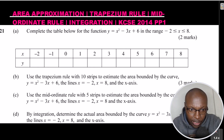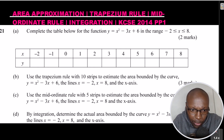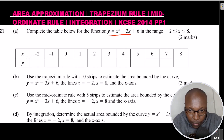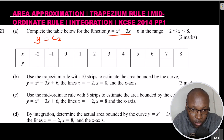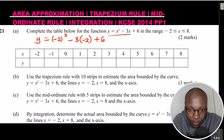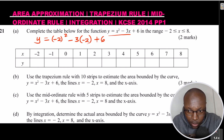The first part is straightforward — you just need to complete the table using that function. To demonstrate, when x is negative 2, substitute into the calculator: negative 2 squared, subtract 3 times negative 2, then plus 6. You do this for all other values. Just be careful with brackets to avoid errors.